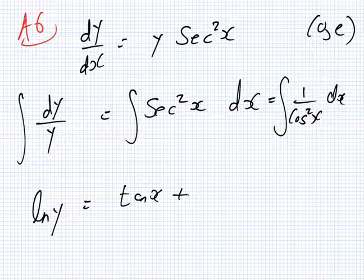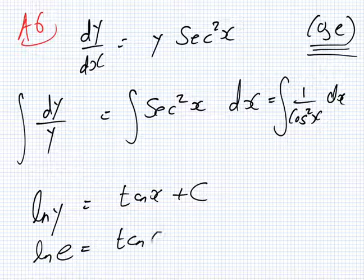Anyway, this becomes tan x plus c. Now, we can find the c by using this point. So this would be log e equals tan 0 plus c. What's tan 0?